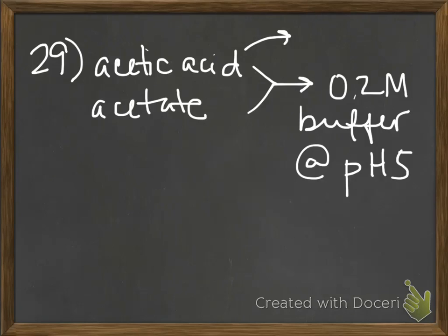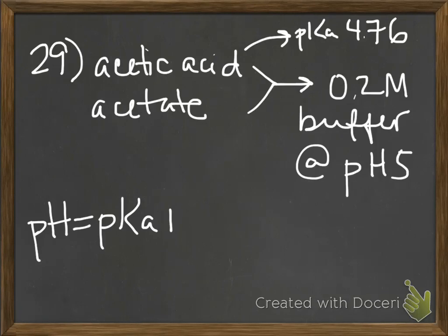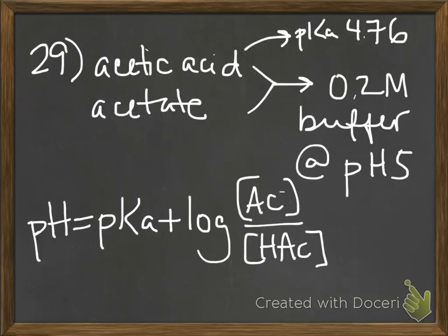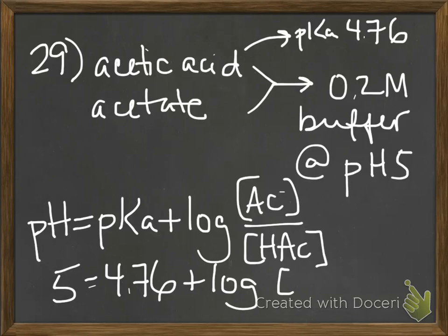You're told the pK of acetic acid is 4.76, and that's going to be helpful because that allows us to set up the Henderson-Hasselbalch equation. So we want a pH of 5, we have a pK of 4.76, and we're looking for the molar ratio of conjugate base to acid.